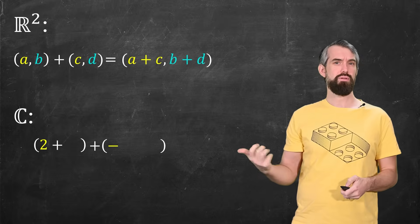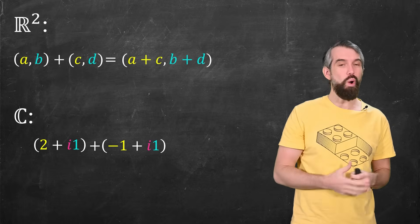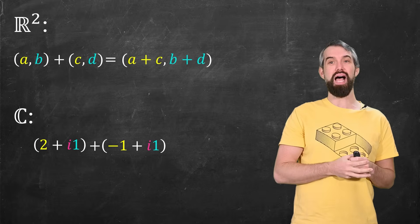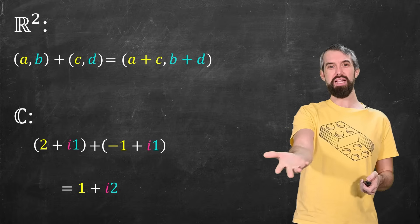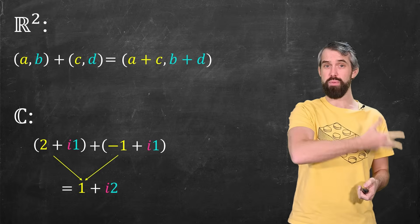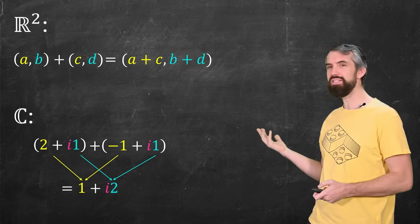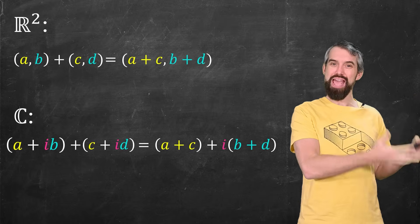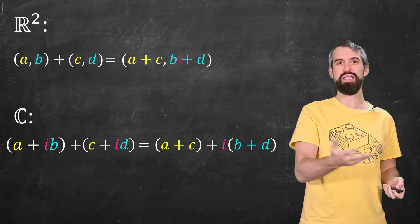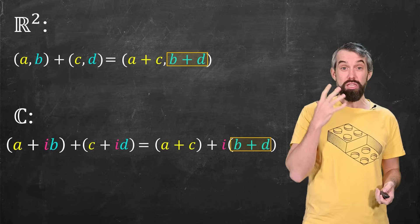What about the complex numbers? Well, it's basically the same thing. Say, 2 plus i times 1 plus minus 1 plus i times 1, this is just 1 plus i times 2. You add the first components, which are both the reals, and then you add the imaginary components together. And if I do this in generality, other than the fact that one is written as pairs with a comma and the other one's got the a plus ib, they have the same first component, they have the same second component, they look exactly the same.